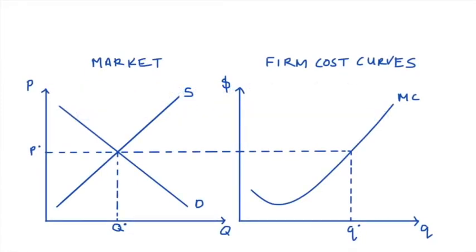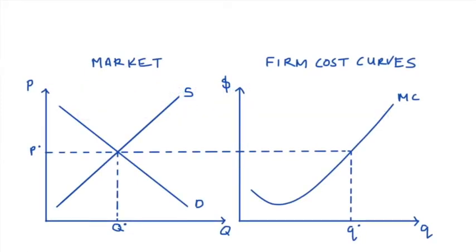So here I have a representation of a perfectly competitive market. On the left-hand side, I have a view of the market as a whole, which consists of the market demand curve and the market supply curves. The market price is P-star and is found at the intersection of market demand and supply. The intersection also describes how much will be traded in the market as a whole, which is Q-star.